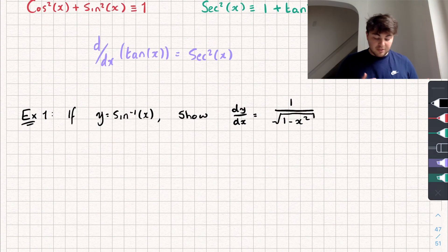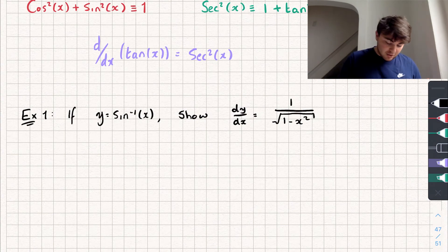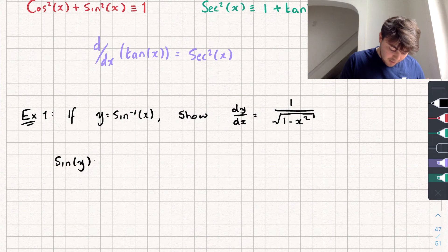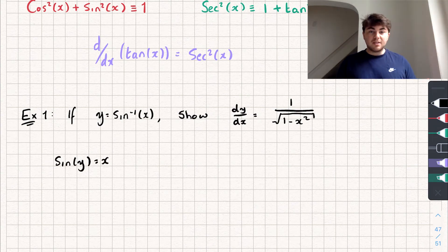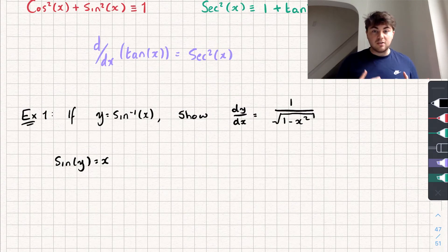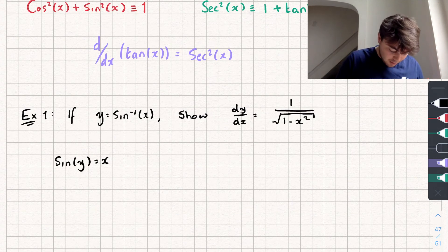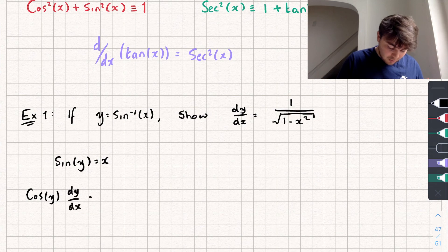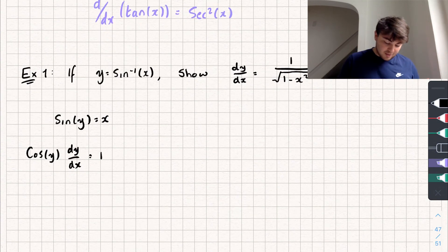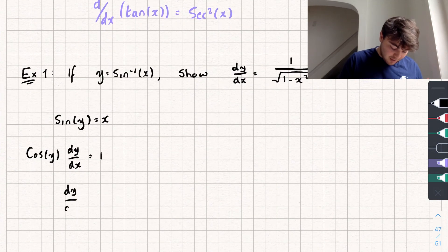Let's look at the first one where we want to calculate the derivative of y = arcsin(x). First, rewrite it so that sine(y) = x, and now we can do implicit differentiation. The derivative of the left-hand side using the chain rule — because we're differentiating a function of y with respect to x — gives us cos(y) · dy/dx, and that equals the derivative of the right-hand side, which is just 1. Rearranging, dy/dx = 1 / cos(y).